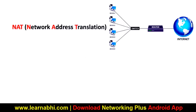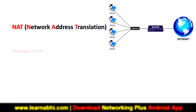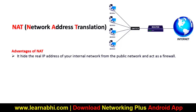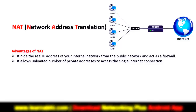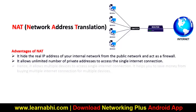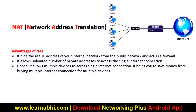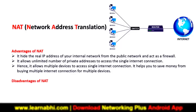Now let's find out the advantages and disadvantages of using NAT in a computer network. Here are the advantages of NAT: As discussed, it hides the real IP address of your internal network from the public network and acts as a firewall. It allows an unlimited number of private IP addresses to access a single internet connection, allowing multiple devices to share one connection. It also helps you save money from buying multiple internet connections for multiple devices.